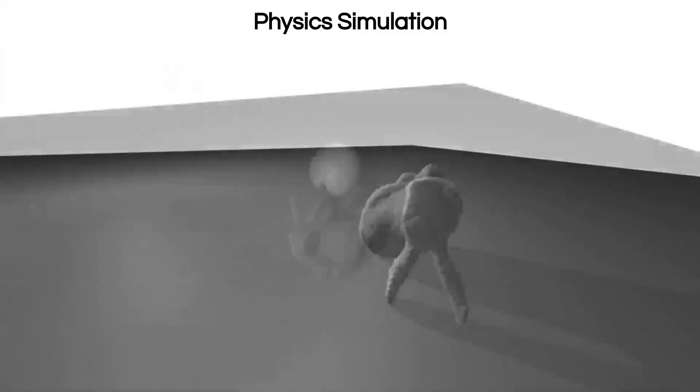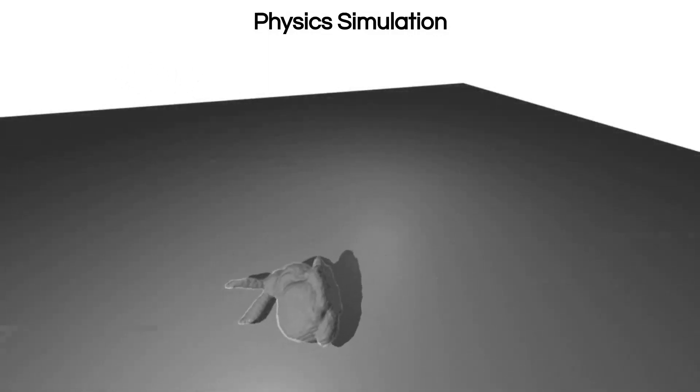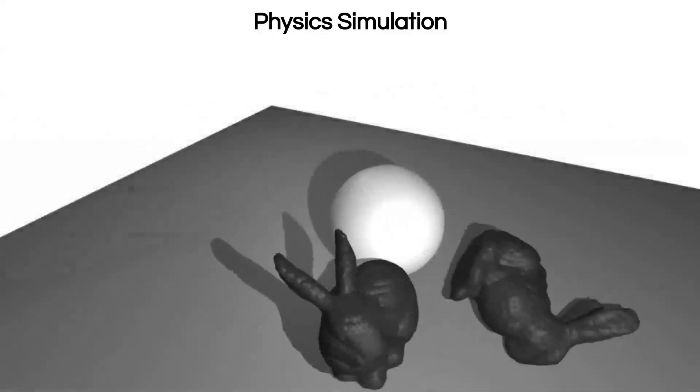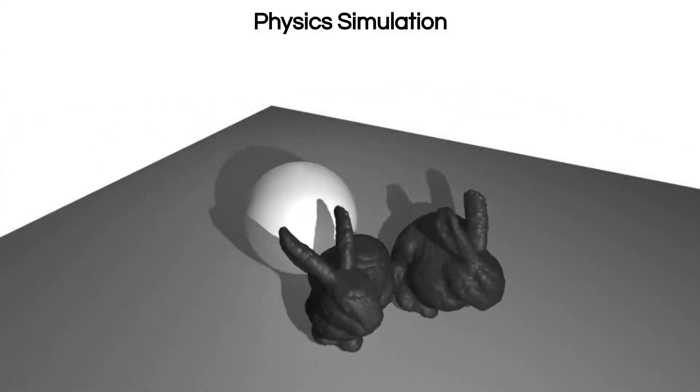This second simulation scenario features contact between a sphere and a neural object. Finally, the third scenario demonstrates contact between two Dynamics Augmented Neural Objects.